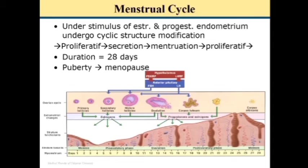Under the stimulus of estrogen and progesterone, the endometrium undergoes cyclic structural modifications. There is a proliferative phase, a secretory phase, and a menstrual phase, after which the cycle repeats. The menstrual cycle is 28 days in duration and starts from puberty until menopause at around 45 to 50 years of age.